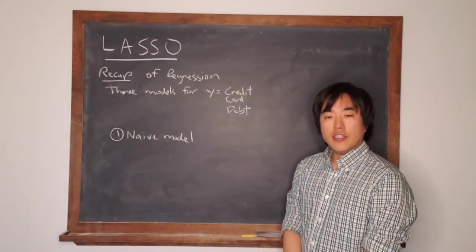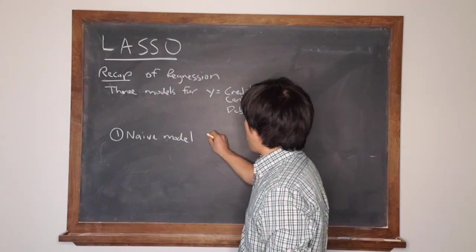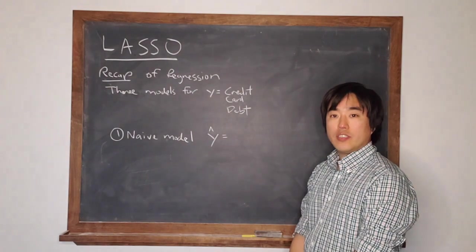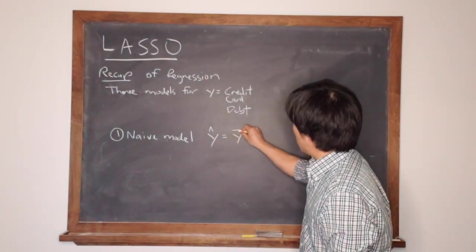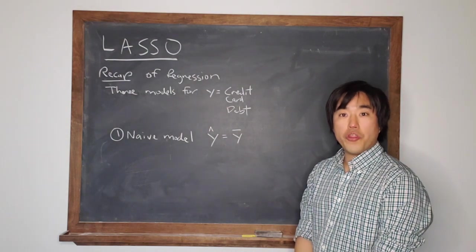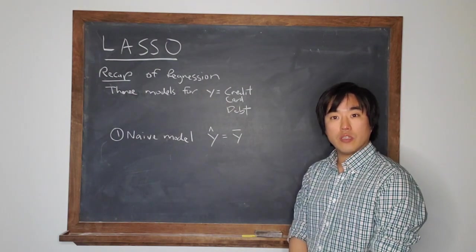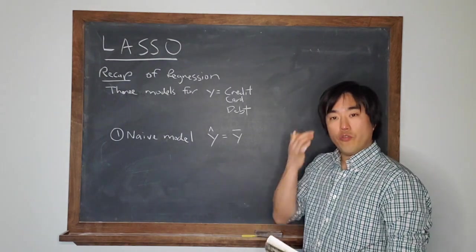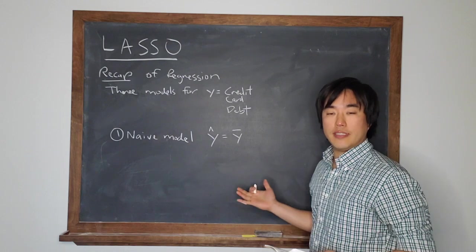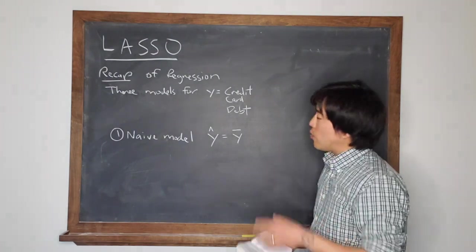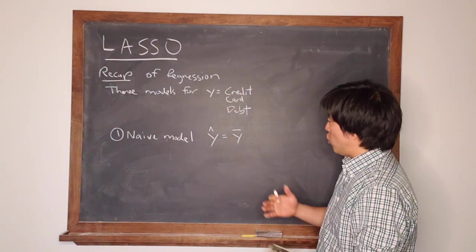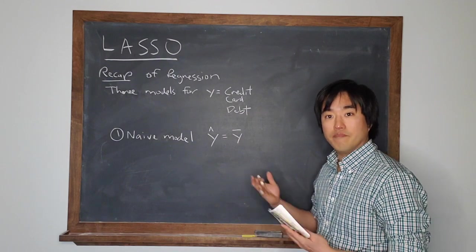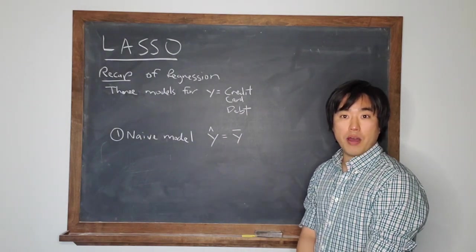One is what I called the naive model. The naive model is as follows: your prediction Y-hat is just equal to Y-bar or the mean of the observations. So notice here you're not actually using any of the predictor variables. You're just saying, for example, if we know nothing about the people in this data set or we have an individual from this population and we know nothing about them, what is a reasonable guess about their credit card debt? Well, it is just the average of everybody in that population.